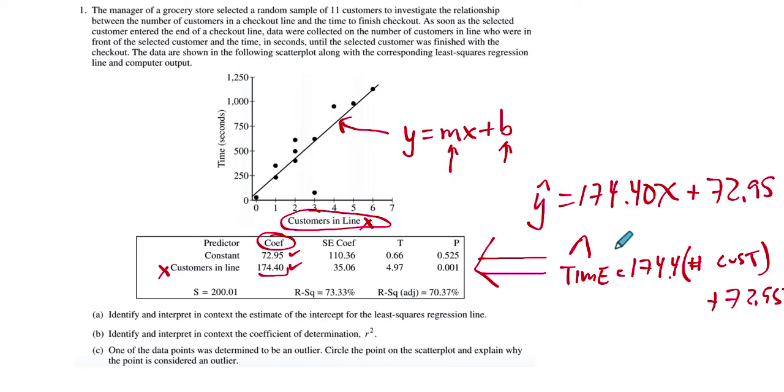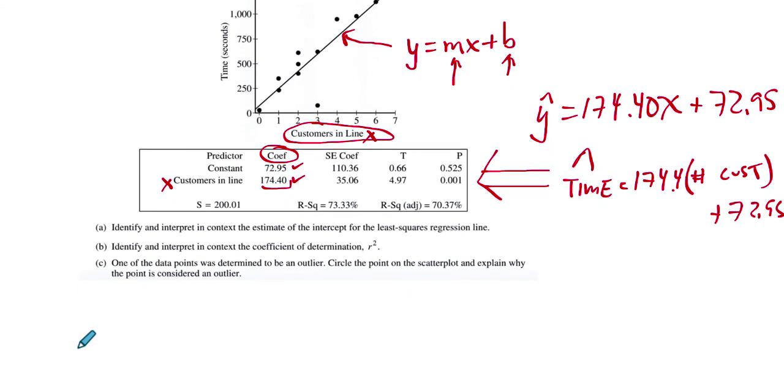So all that being said, let's now look at the questions and see if we can answer. Question A, identify and interpret in context the estimate of the intercept. Okay, the intercept, we're talking about the y-intercept for the least squares regression line. So the y-intercept is the 72.95. So that's this number right here. So in context, what is that?